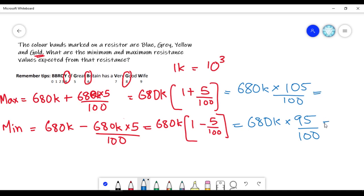If you want to get the answer, that's the maximum, that's minimum. Maximum is 714 kilo ohm. For 95 percentage, 646 kilo ohm is the minimum value. Automatically range is equal to from 646 kilo ohm to 714 kilo ohm.